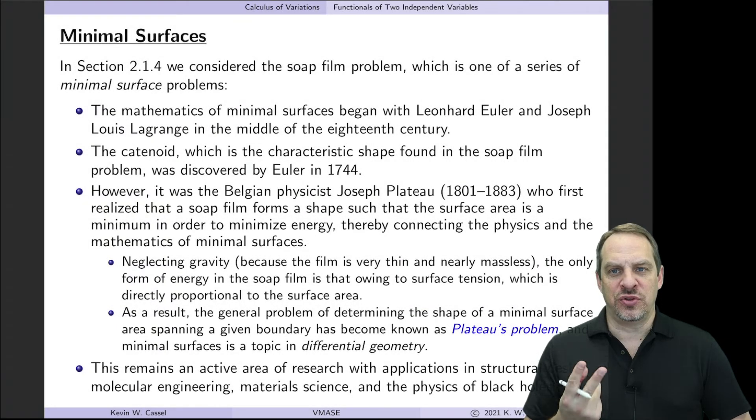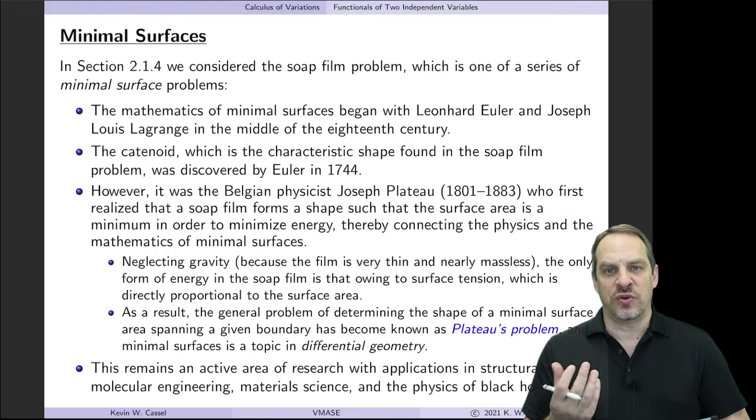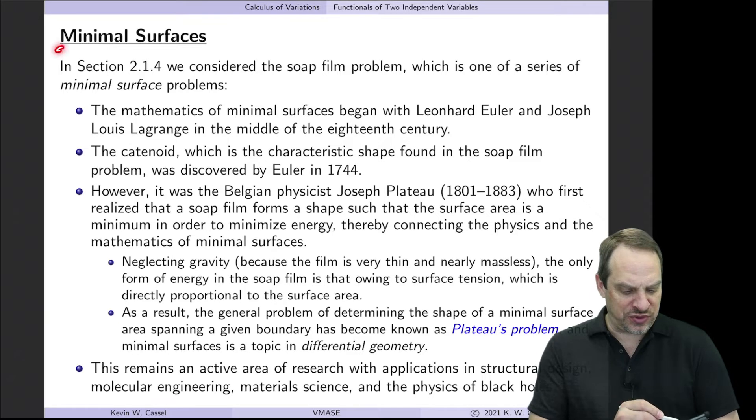We've been looking at functionals that involve two independent variables, so they result in partial differential equations for those multiple independent variables. And I want to take a look at a specific physical example known as minimal surfaces.